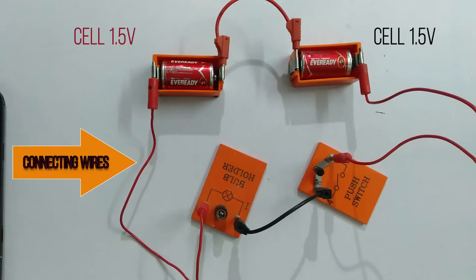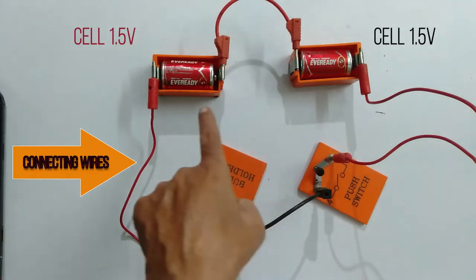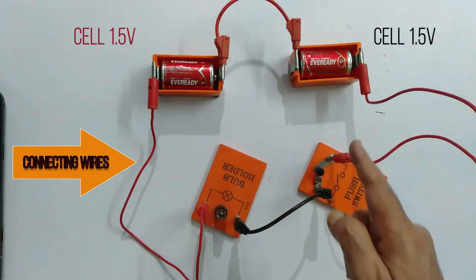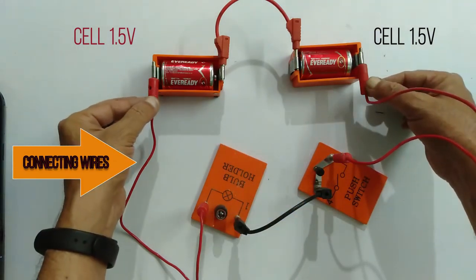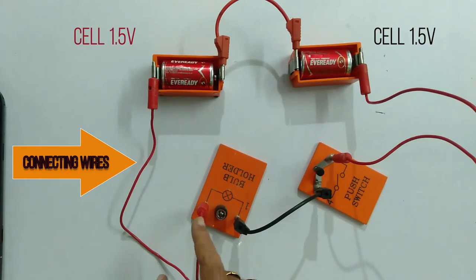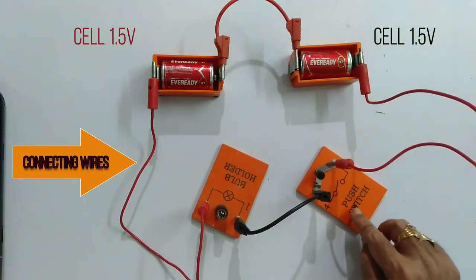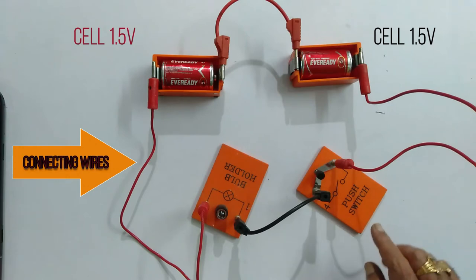In this activity, I have taken two cells in series so that the net potential difference across these two ends is 3 volts and I connected one bulb and a push switch. Now, this is called a simple electric circuit, but here the light is not glowing.